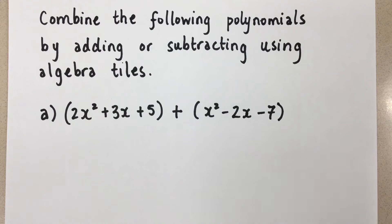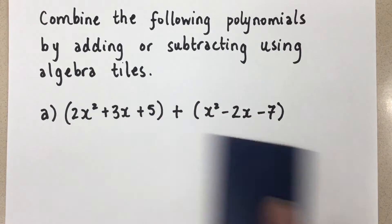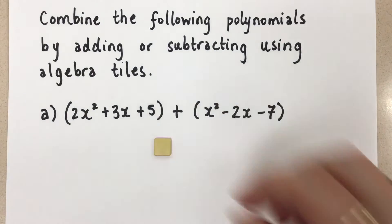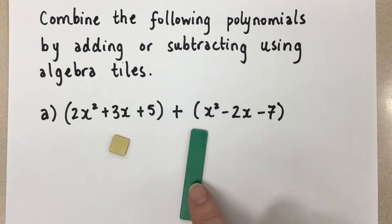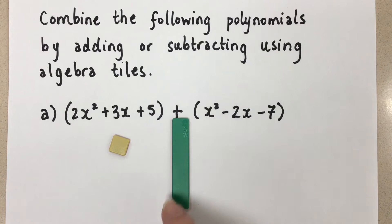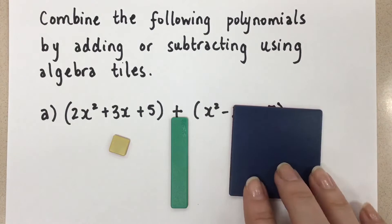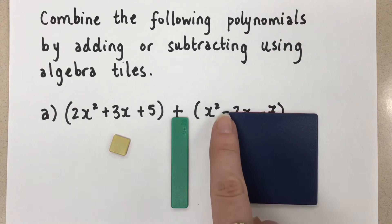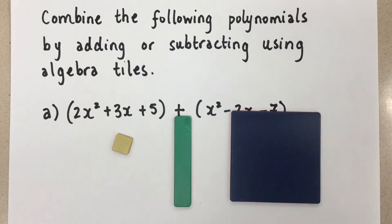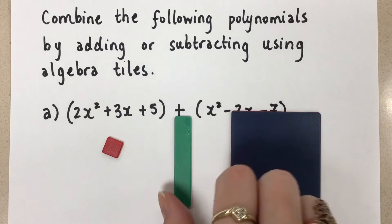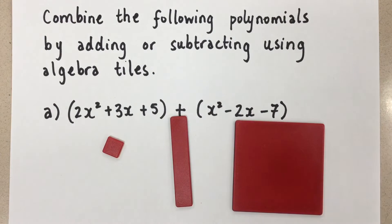So to start this off, let's first remind ourselves of the algebra tile pieces. This is a positive 1. Then, this one's going to represent x, assuming we don't know the length of it, so we'll call it x. And then this one will represent x squared, because we have x times x gives us an x squared. If we want them to be negative versions, we flip them over to see the red side, and that would make them negative.